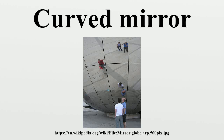A curved mirror is a mirror with a curved reflecting surface. The surface may be either convex or concave. Most curved mirrors have surfaces that are shaped like part of a sphere, but other shapes are sometimes used in optical devices.